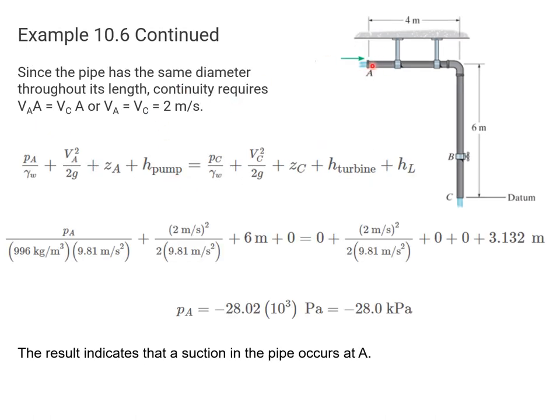Since the pipe has the same diameter throughout, the continuity equation requires that the velocity be the same throughout the pipe. We can apply Bernoulli's equation.